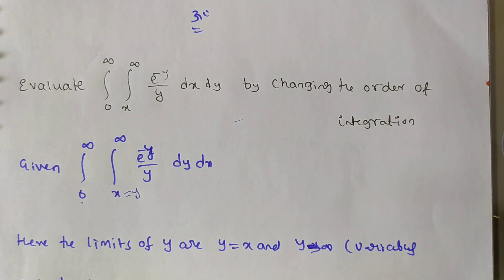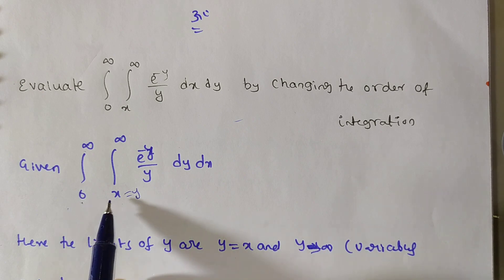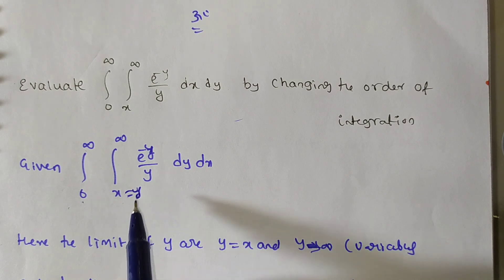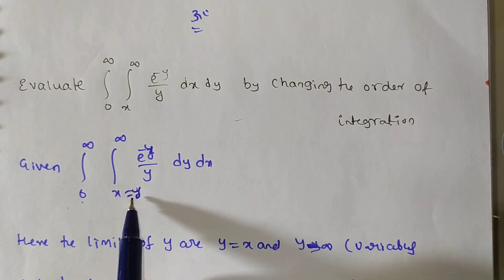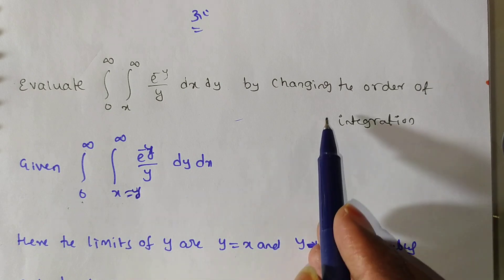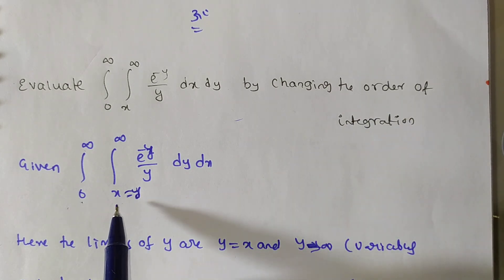When solving a double or triple integral, first observe whether all the limits are independent or not. If independent, you can integrate irrespective of the variable. But when a dependent variable is involved, you must integrate with respect to the dependent variable first. Here the limit of y is a function of x, so first you integrate with respect to y — but we are changing the order of integration.